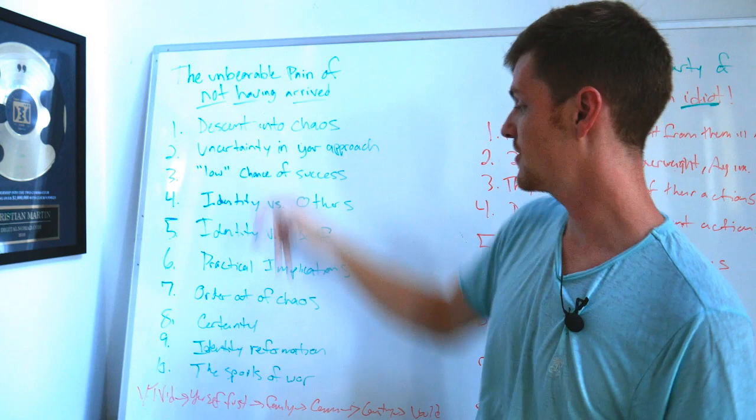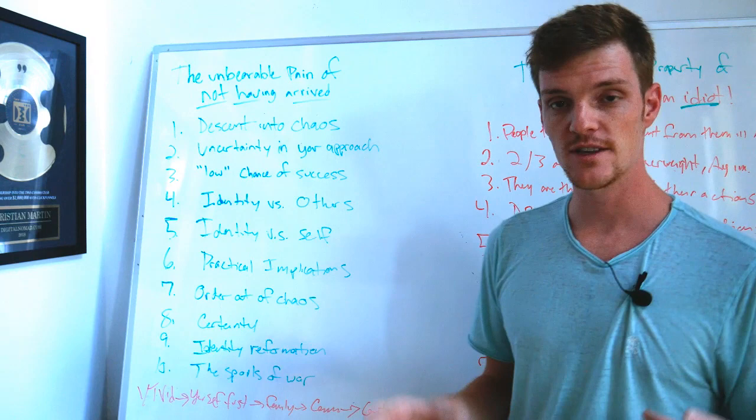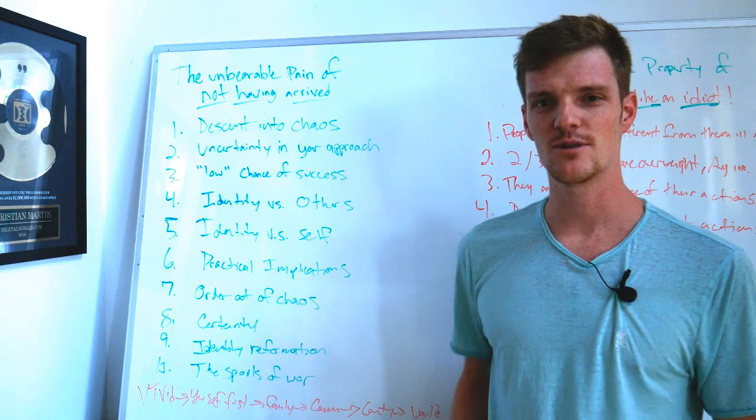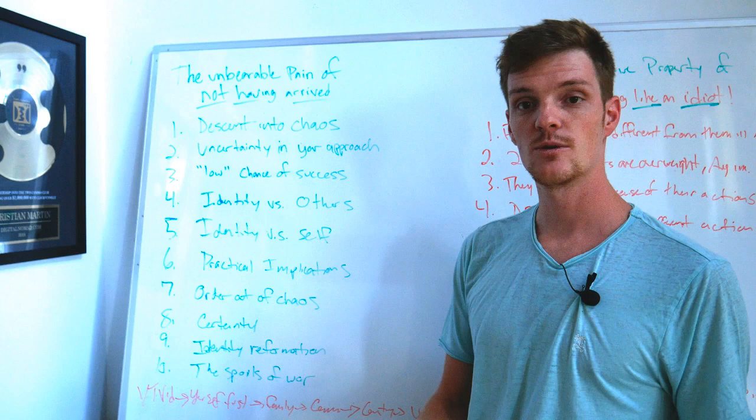Now what happens in this process, in this unbearable pain of not having arrived? What happens? We've started to arrive. At this point, if you can make order out of chaos, you're going to have an identity reformation, which means you've proven to yourself that this dream you held in the back of your mind, the entire time, the one that everyone doubted, the one that you doubted yourself, you've proven to yourself that it's possible to come out the other side. And that is going to make a permanent shift in your identity.